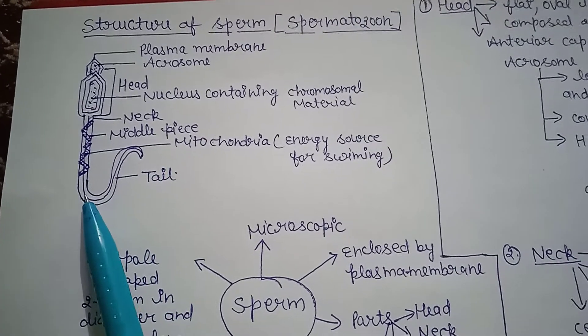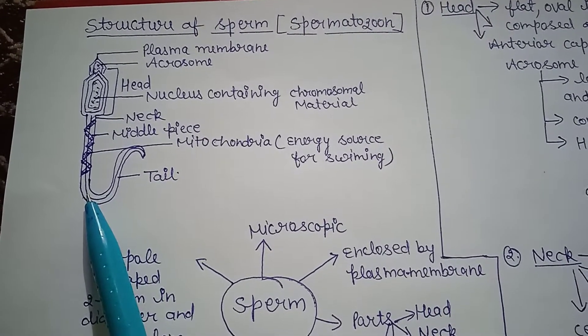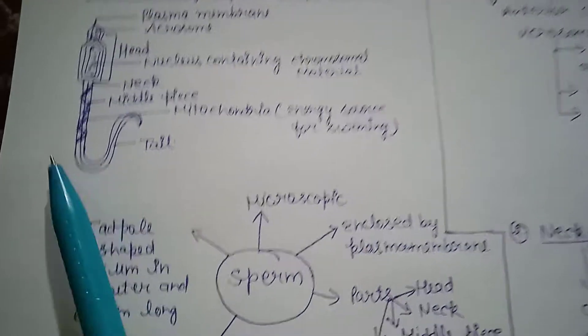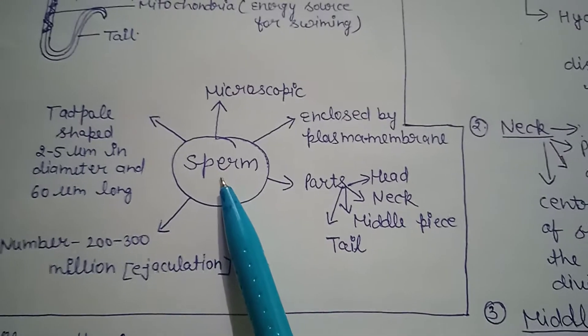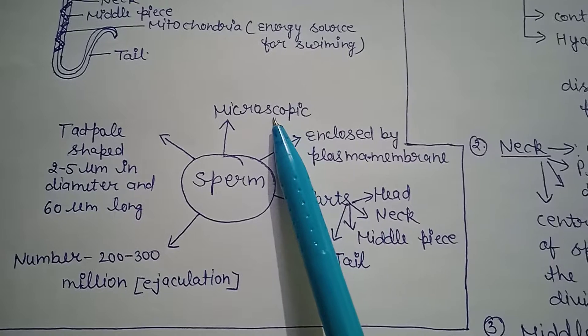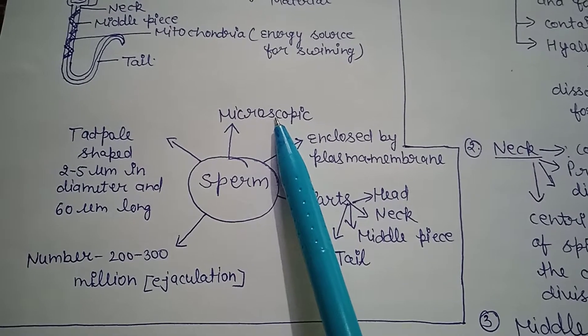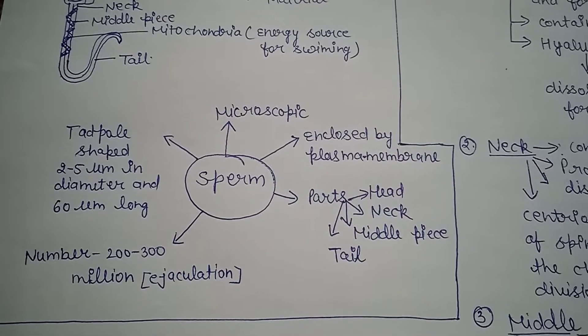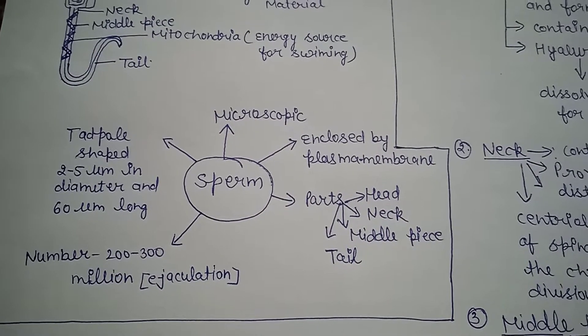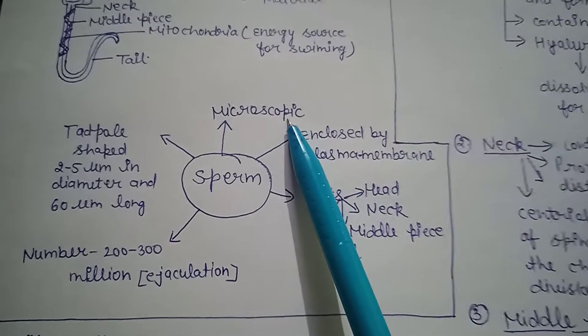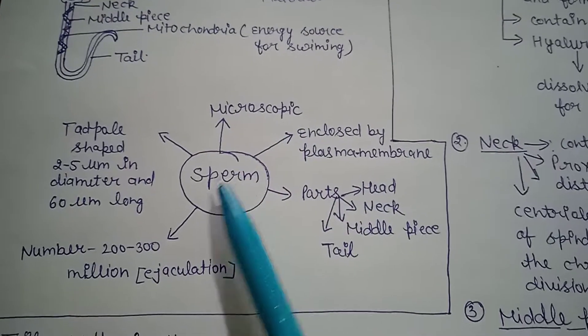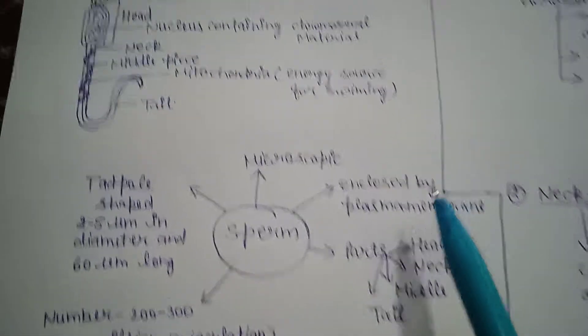Now I am going to tell you about some facts about sperm. Sperms are microscopic because we cannot see them with naked eyes, only with the help of a microscope. That's why sperms are microscopic. Sperms are enclosed by the plasma membrane.